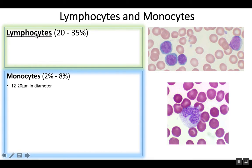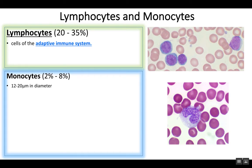Lymphocytes are the second most abundant circulating white blood cell, just after the neutrophils, which were about 60 to 70 percent. So lymphocytes are very significant in the bloodstream. They're involved in what we call the adaptive immune system.